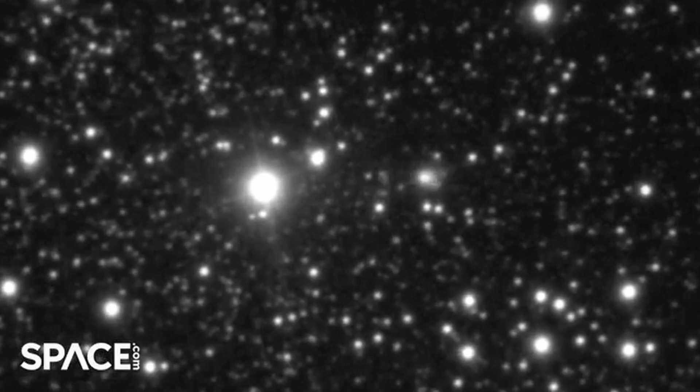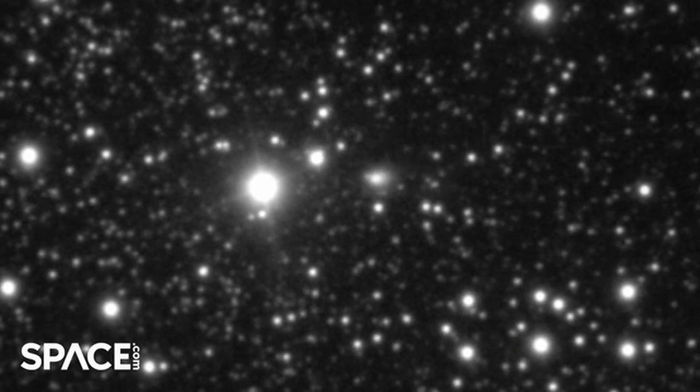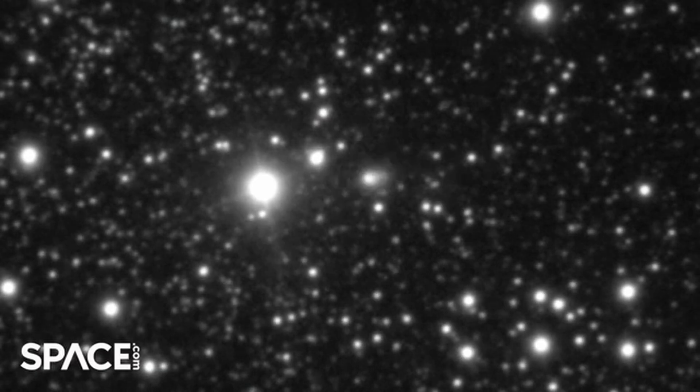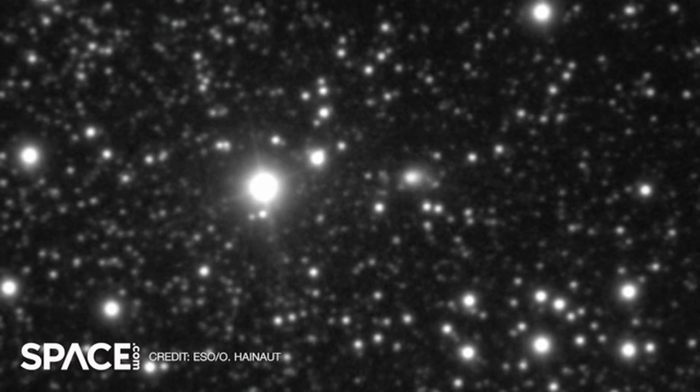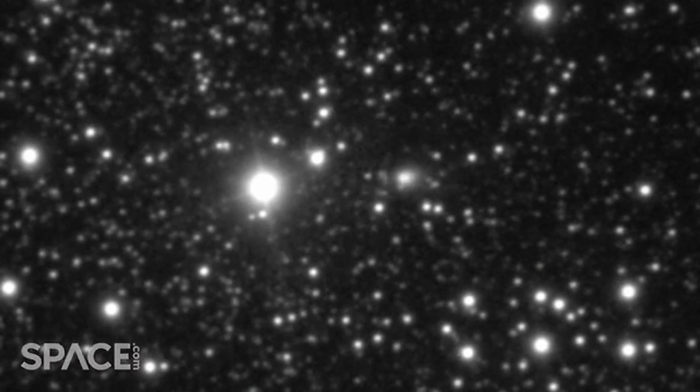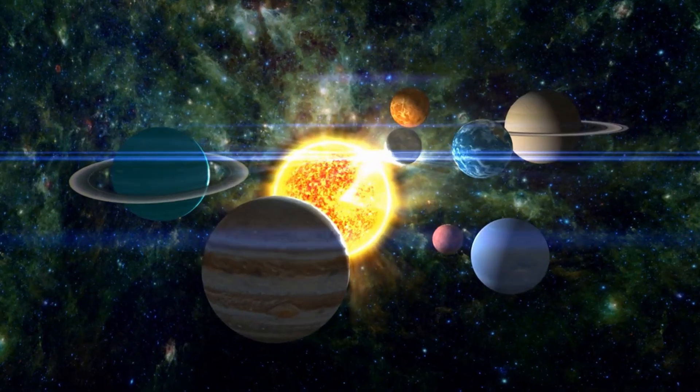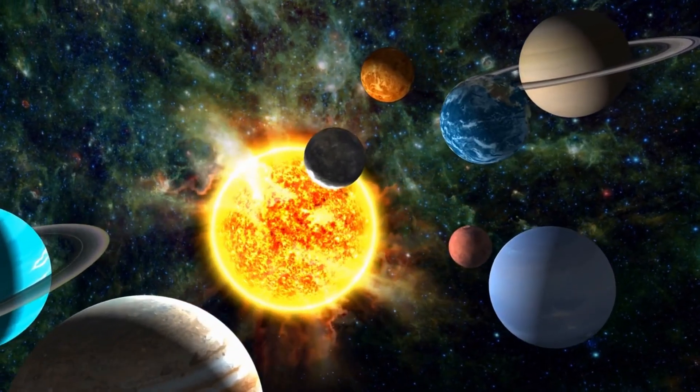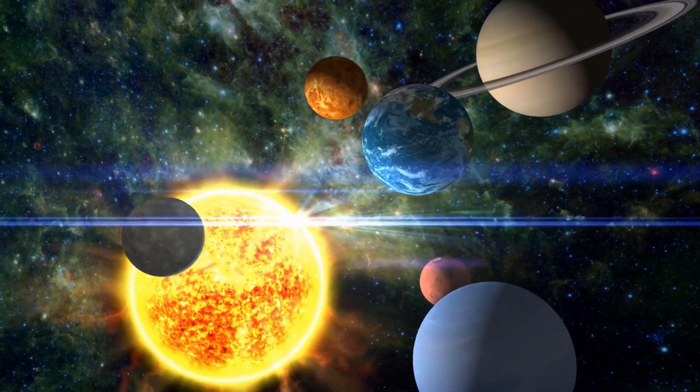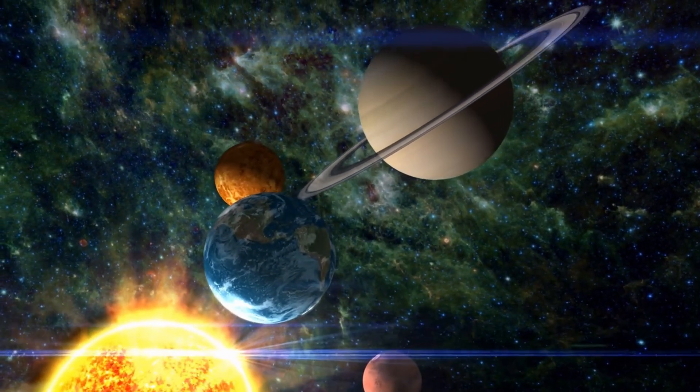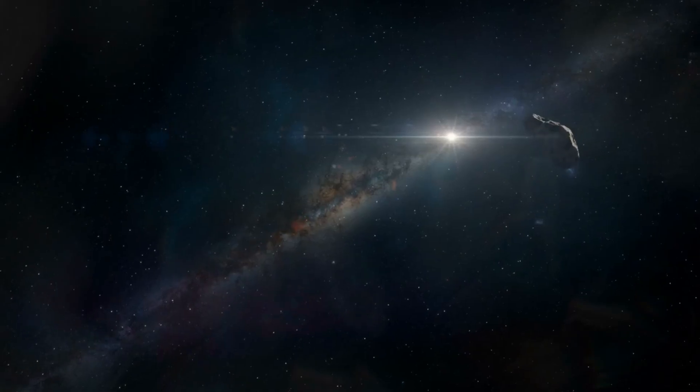Another explanation involves exotic comet physics. Interstellar comets may contain volatile materials or structural characteristics never before observed in solar system comets. If 3i Atlas possesses an unusually uniform distribution of volatile materials, or an internal structure that channels sublimating gases in a stable direction, then its non-gravitational acceleration could be far more consistent than typically observed. This would allow outgassing to act in a controlled manner, inadvertently producing a trajectory shift that happens to intersect precisely with Jupiter's hill radius.